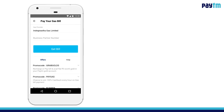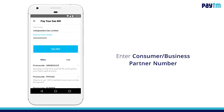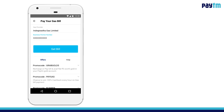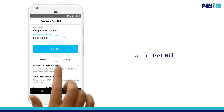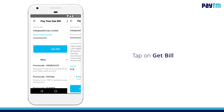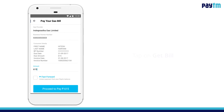Now, enter your consumer number or business partner number mentioned on your bill. You can refer to the sample bill to find the consumer number in your physical bill copy. Tap on Get Bill to get the bill details like consumer name, due date, bill amount, etc.